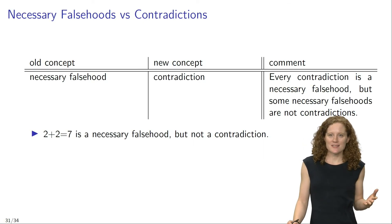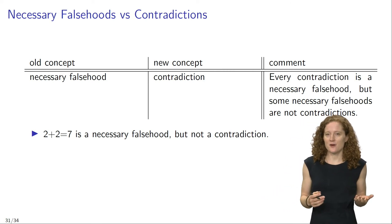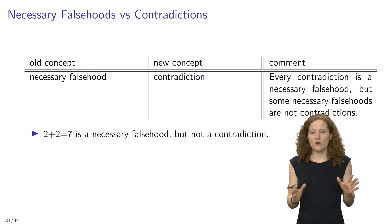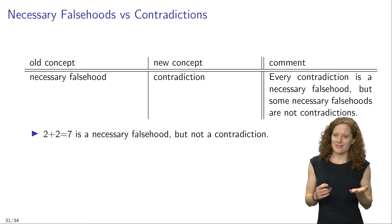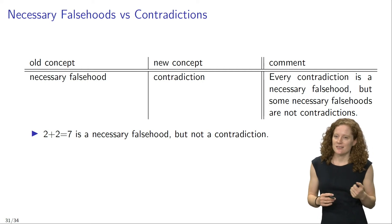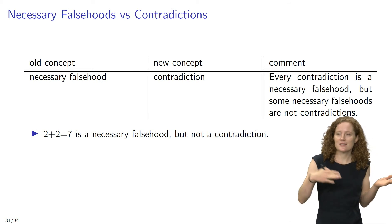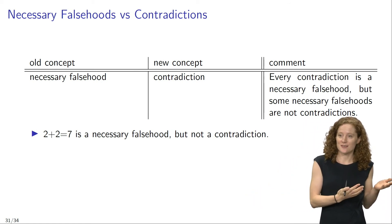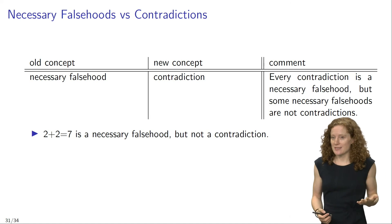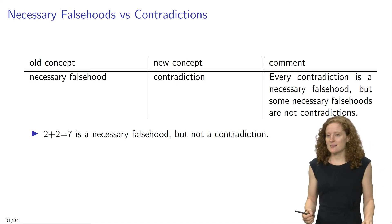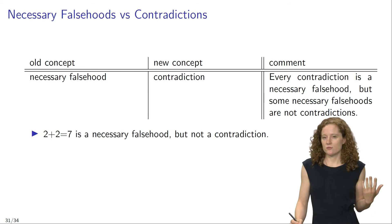Let's compare necessary falsehoods with contradictions. A sentence is a necessary falsehood just in case it is false in every possible scenario. In contrast, a sentence is a contradiction just in case it is false on every possible valuation. Every contradiction is a necessary falsehood, but some necessary falsehoods are not contradictions. For example, '2 plus 2 equals 7' is a necessary falsehood, but it is not a contradiction, and the reason is exactly analogous to our previous example.